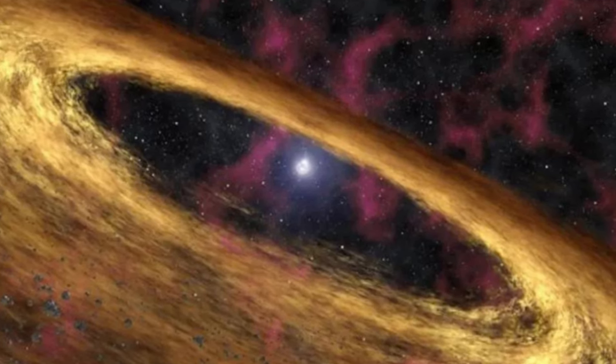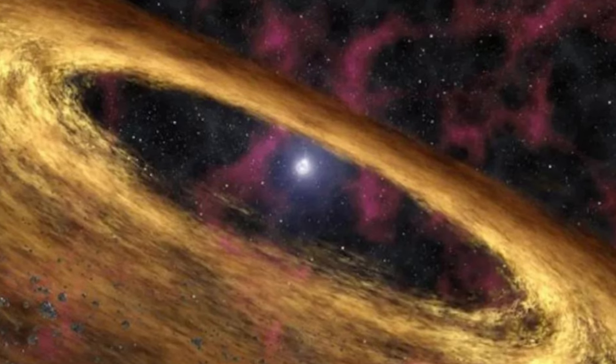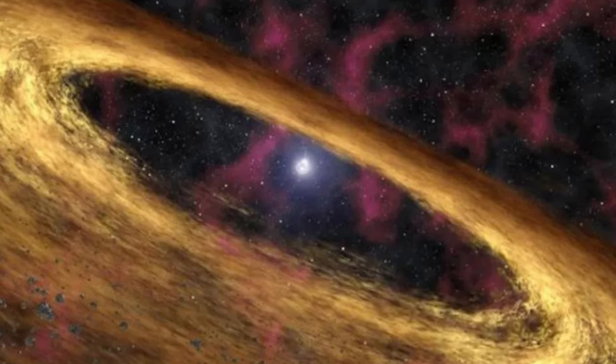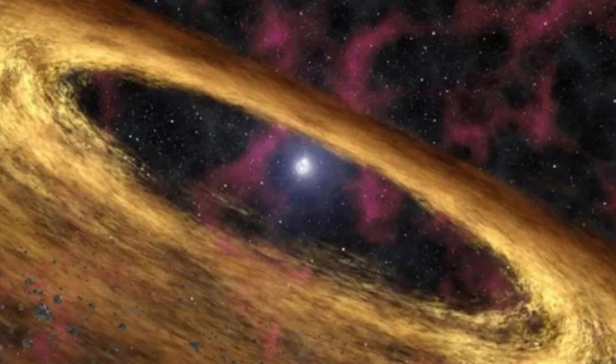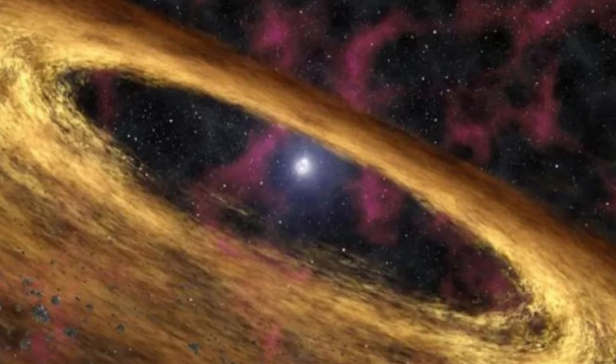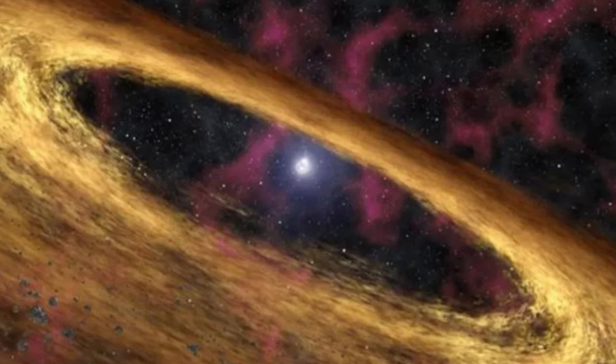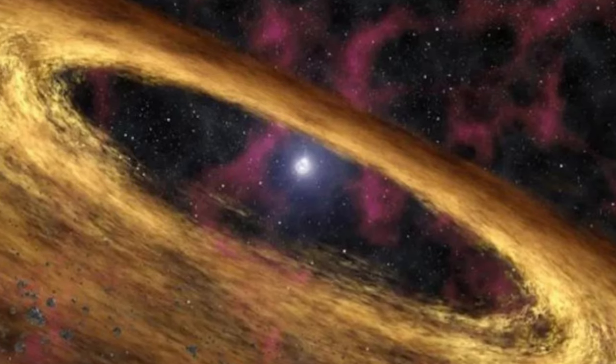These dead stars are highly magnetized, blasting beams of electromagnetic radiation out of their poles as they spin. When one of those beams points toward Earth, the effect is like a lighthouse, with the light blinking on and off as the beam strobes past us.